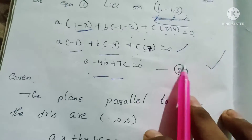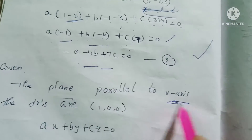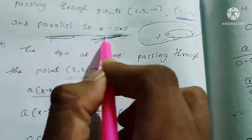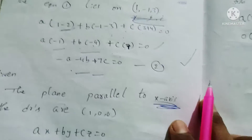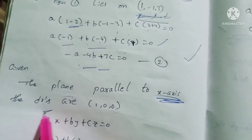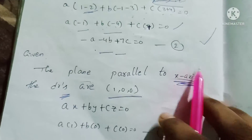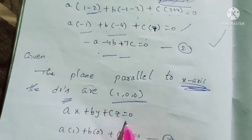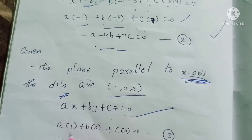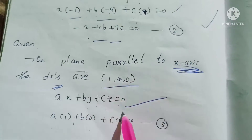Since the plane is parallel to the x-axis, the direction vector of the x-axis is (1, 0, 0). Using the formula ax + by + cz = 0, the condition gives: a·1 + b·0 + c·0 = 0, so a = 0. This is the second equation.